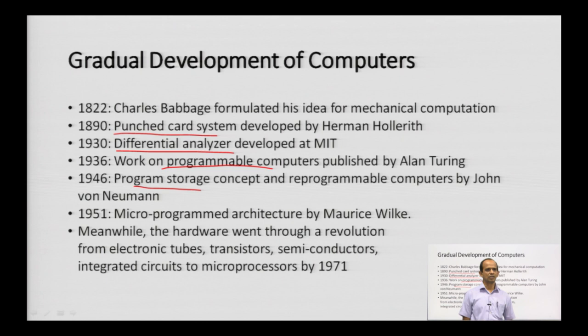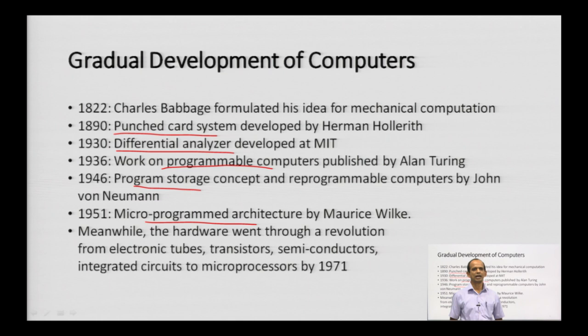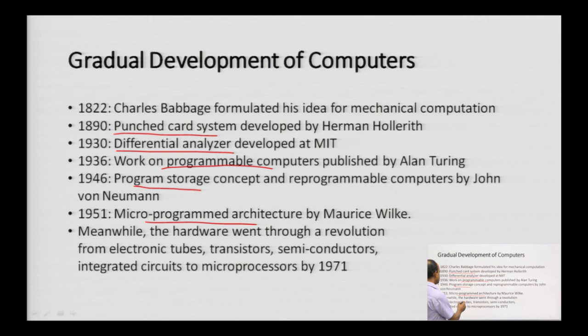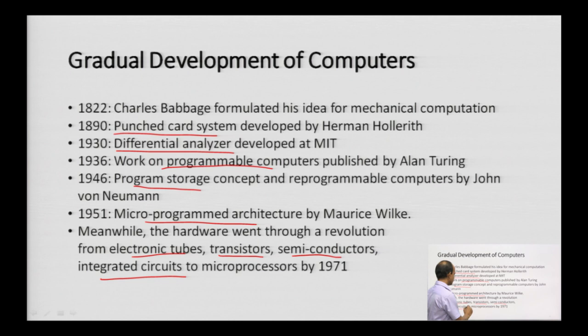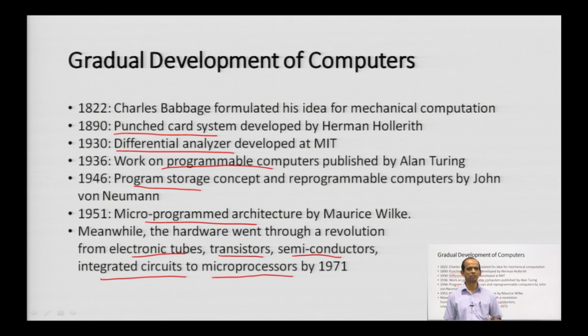The micro-programmed architecture was developed by Maurice Wilkes in 1951. Simultaneously, hardware was also evolving: it went through a revolution from electronic tubes, then transistors, then semiconductors, then integrated circuits, and finally microprocessors were developed in 1971. Since this is not a computer science or electronics course, we will not go into further details — the idea is only to have some awareness of these concepts.